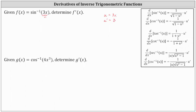Now if we take a look at our derivative formulas, the derivative of inverse sine of u with respect to x is equal to one divided by the square root of the quantity one minus u squared, times u prime. This means in our case, f prime of x is equal to one divided by the square root of the quantity one minus the square of 3x, times u prime, which is times 3.